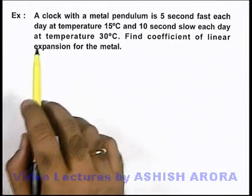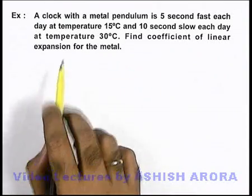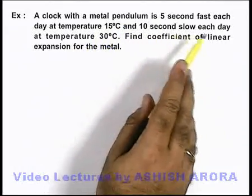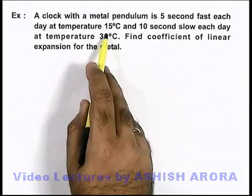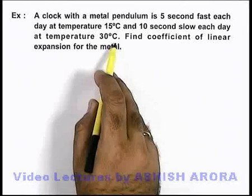Now, let's consider an example to analyze a similar situation. It is saying a clock with a metal pendulum is 5 seconds fast each day at temperature 15 degree centigrade, and 10 seconds slow each day at temperature 30 degree centigrade.